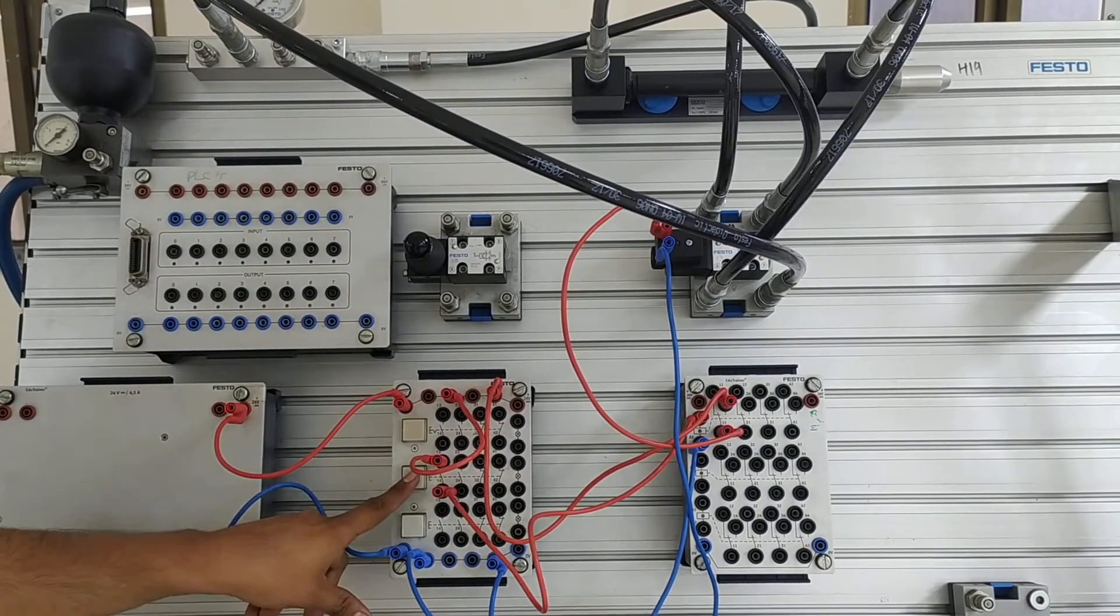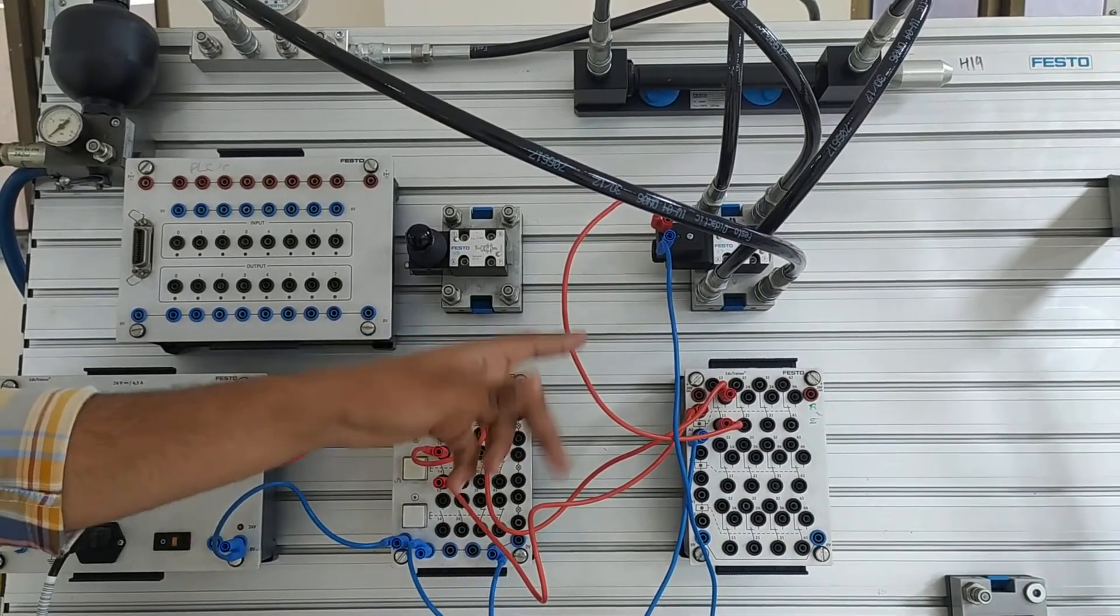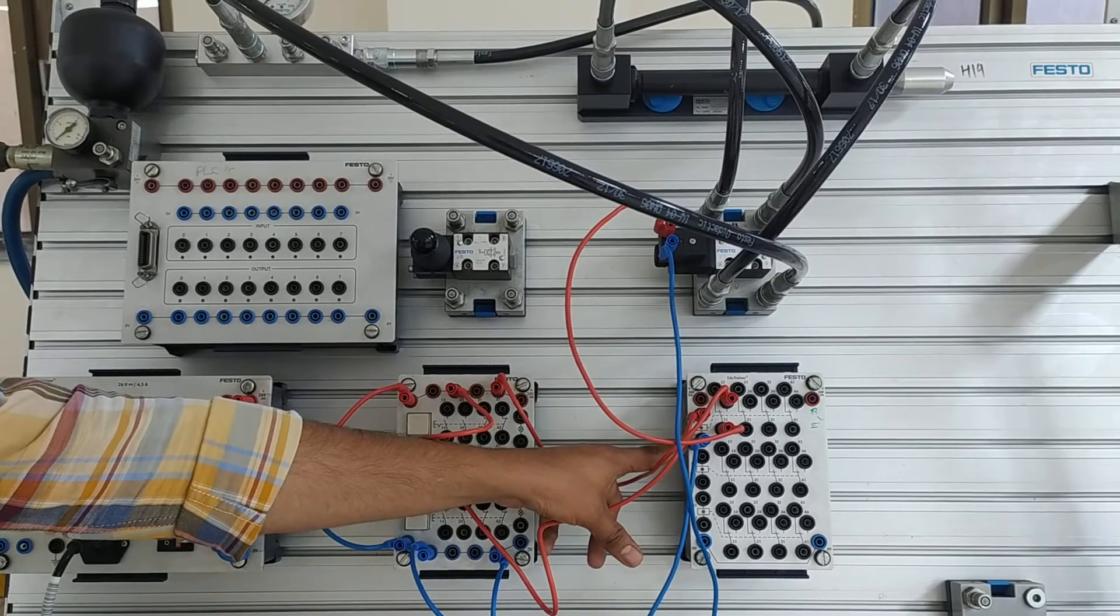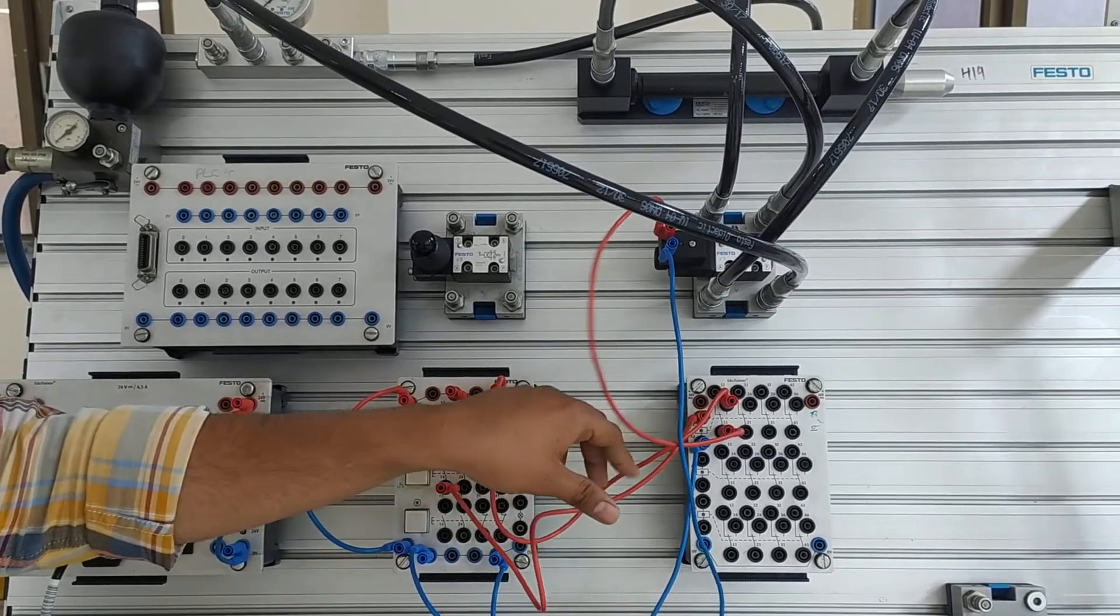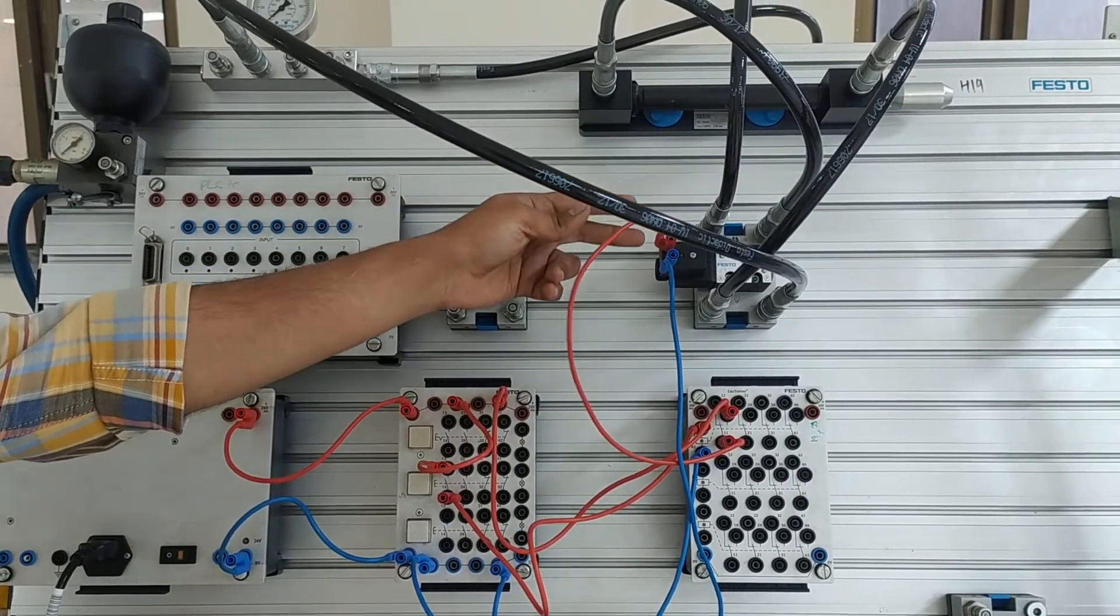When the push button is pressed, the signal will go to the relay and the coil will energize. Due to this, the contact will change from normally open to normally closed, and the signal will go to the solenoid valve.